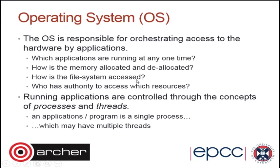This is what we call shared memory programming — OpenMP is an instance of this. A single program creates multiple workers that use multiple cores. Ideally, if you've got eight threads they can do eight things at once and your program runs eight times faster. It's not always like that, but that's the ideal.